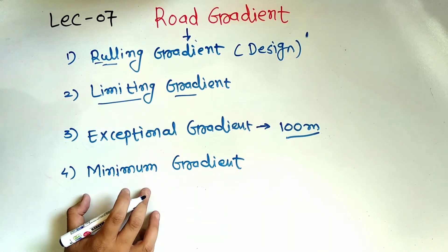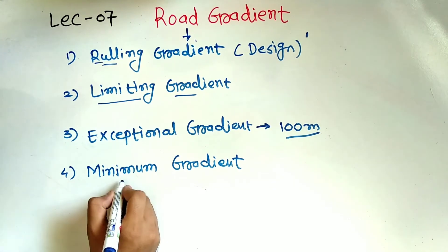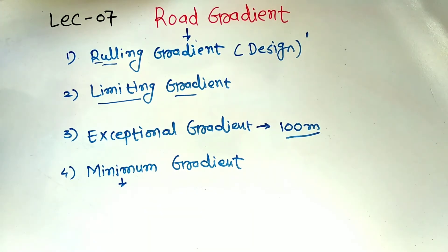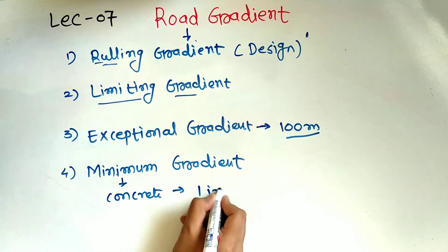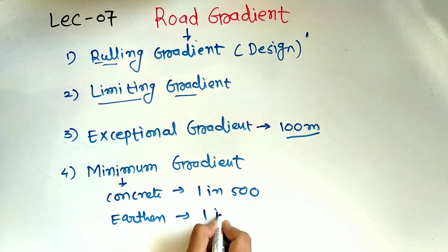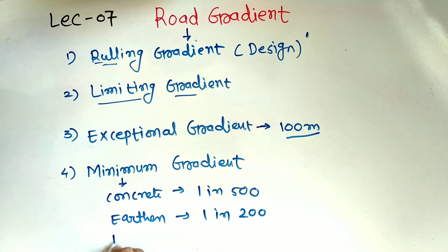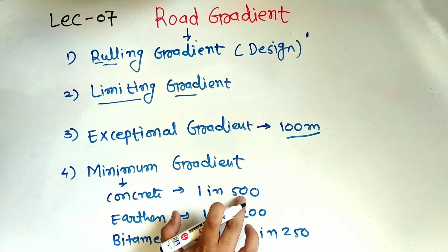The fourth type is the minimum gradient. The minimum gradient is defined as the gradient provided to drain rainwater or surface water — it is called the minimum gradient. As per the IRC, for concrete surface it is 1 in 500, for earthen road it is 1 in 200, and for bituminous road it is 1 in 250.